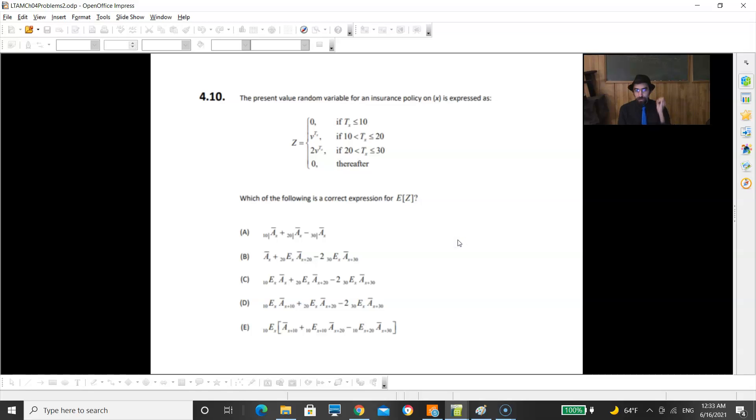Next one, present value random variable of insurance policy is expressed as piecewise. It's piecewise, which means frank insurance. You're frankensteining a couple of things together. They're asking which is a correct expression for the expectation of Z. We realize it's a frank insurance, and the pattern is that it's worth 0 for the first 10 years, 1 for the next 10 years, 2 for the next 10 years, and 0 afterwards. So we're looking for that 0, 1, 2, 0 pattern.